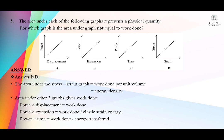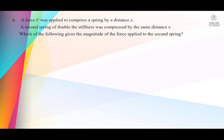Question number 6: a second spring with double the stiffness, so k value will be 2k, was compressed by the same distance x. Which of the following gives the magnitude of the force applied to the second spring? The answer choices are 4F, 2F, F, and F/2.